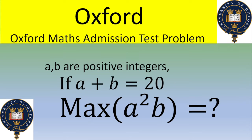Hello and welcome. In this video, we look at an exercise given during the Oxford admission. A and B are two positive integers. If A plus B equals 20, find the maximum value of A squared times B. If you want to give it a try, please pause the video. Otherwise, let's see the solution.